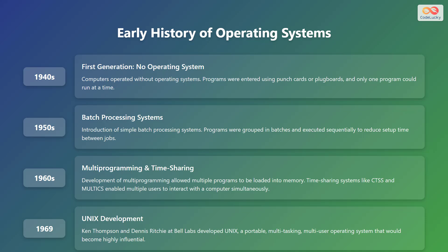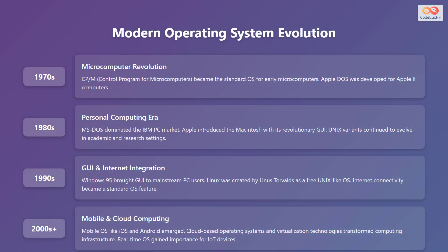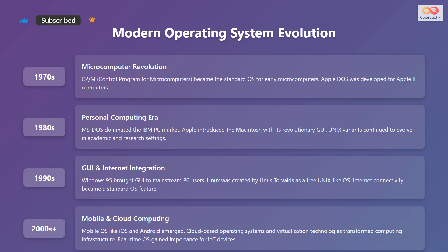In 1969, Ken Thompson and Dennis Ritchie at Bell Labs developed Unix, a portable, multitasking, multi-user operating system that would become highly influential. In the 1970s, the microcomputer revolution led to CP/M — Control Program for Microcomputers — becoming the standard operating system for early microcomputers, and Apple DOS was developed for Apple II computers.